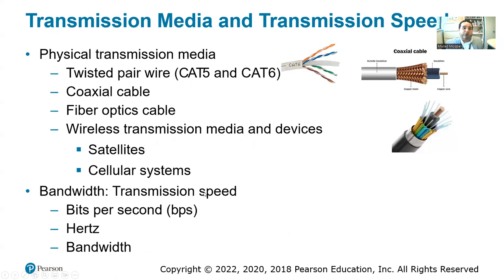For physical transmission media, we have twisted pair wire — copper wires that are twisted — which can serve up to 10 gigabytes per second, especially the Cat 6. One issue with twisted pair wire is it suffers from interference sometimes. On the other hand, coaxial cable is used by cable companies. It doesn't have the interference issue of twisted pair wires and can also transmit up to one gigabyte of internet speed.